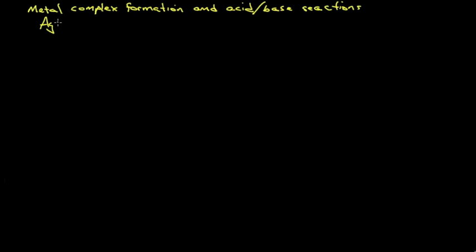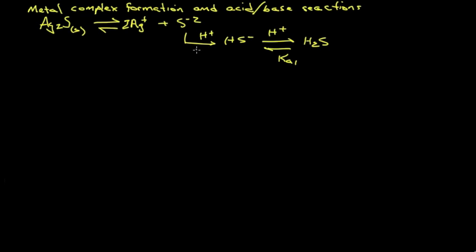Imagine we're looking at silver sulfide, which is a solid, and in aqueous solution it will dissolve to some extent to form two silver ions and sulfide anions. Right away we know that in an aqueous system there's hydrogen ion that could possibly protonate sulfide, and depending upon the pH it might form even diprotonated species. So these equilibria have equilibrium constants associated with them, Ka1 and Ka2, that describe how those things interact.